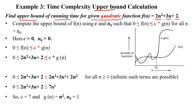When we are calculating the upper bound using Big O notation, we should know c and n₀, such that the given Big O notation function satisfies: 0 ≤ f(n) ≤ c·g(n) for all n greater than n₀. Here, the constant c and n₀ are always positive values greater than 0.